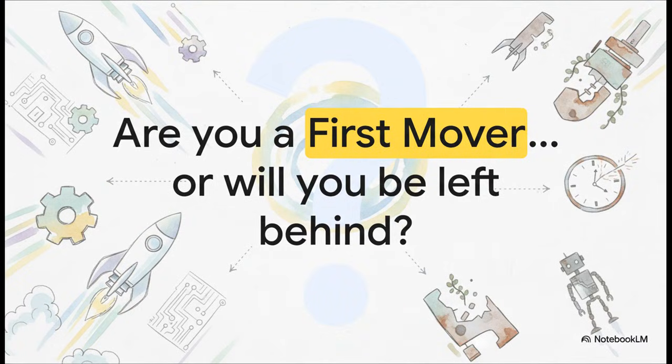Which brings us right back to the final, unavoidable question. The debate is pretty much over on whether AGI is coming. The real conversation now is that it might already be here. So the only question that matters is, what are you going to do about it? Are you going to be a first mover, or are you going to wait and risk being left behind?